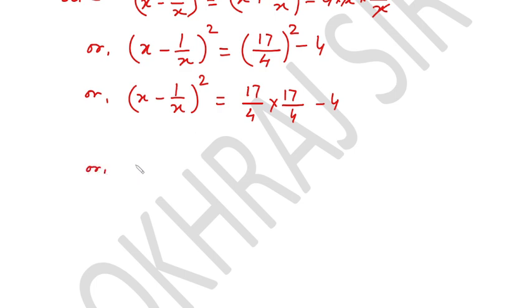So if we multiply 17 with 17, it will give 289 divided by 16, sorry, 16 minus 4.